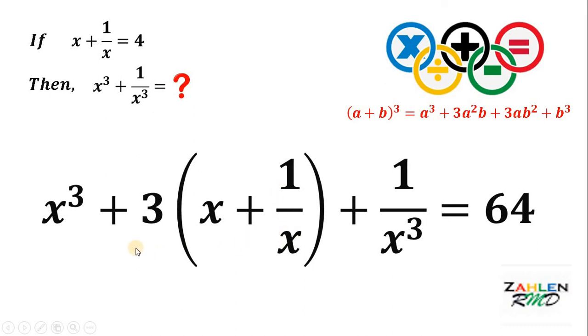Notice that we have x cubed plus 1 over x cubed and that's what we want. So, to achieve that, we need to subtract 3 times x plus 1 over x on both sides.